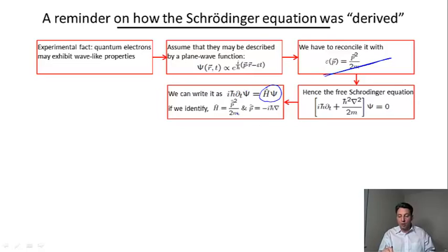We associated with the momentum that would have appeared in classical theory this operator, which is -iℏ gradient, which indeed is an operator that acts on the wave function.